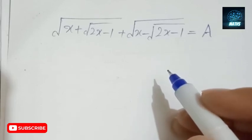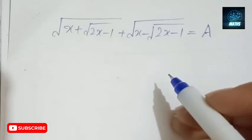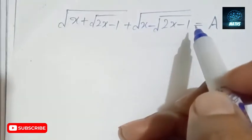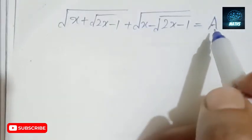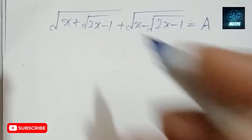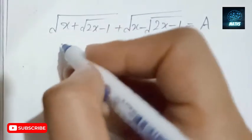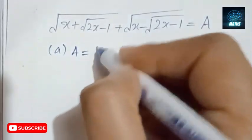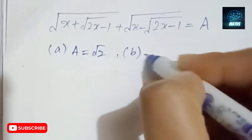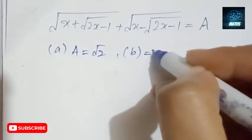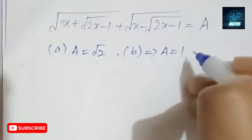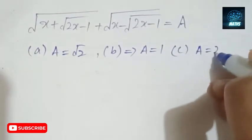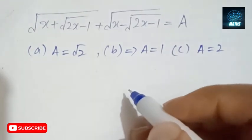Hi everyone. In this video we are going to solve a very nice algebraic equation: square root of x plus square root of 2x minus 1, plus square root of x minus 2x times square root of 2x minus 1, which equals a. Here are the given conditions for a: when a equals square root of 2, when a equals 1, and when a equals 2.